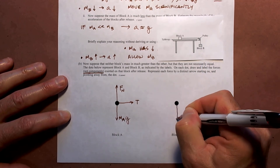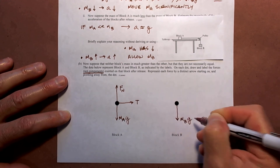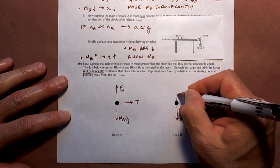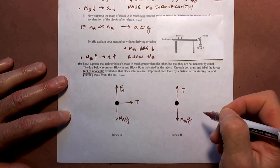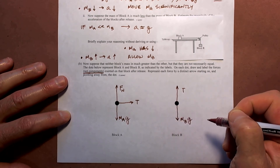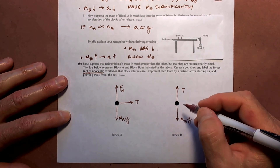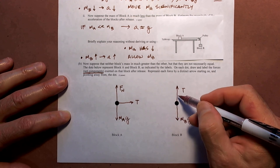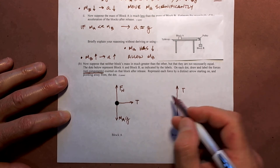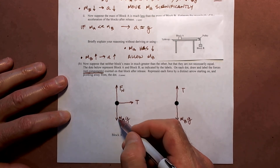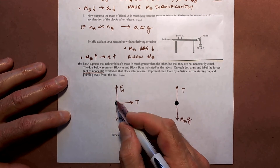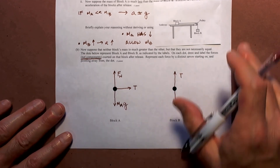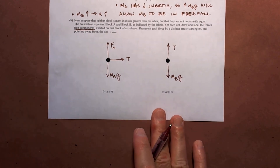Block B is hanging, so it has a weight force mB times G downward, and a tension force upward from the string. There are no other forces on block B. In terms of magnitudes: T and T should be the same length on both diagrams, and FN and mAG should be the same length. As long as your arrows are a close approximation showing nothing extraordinarily out of the realm of possibilities, you should be fine with your free body diagrams.